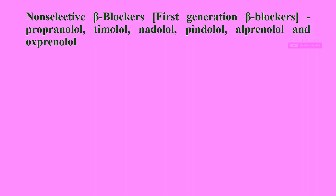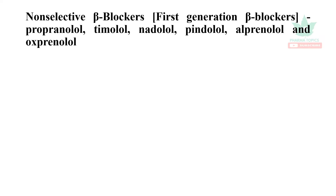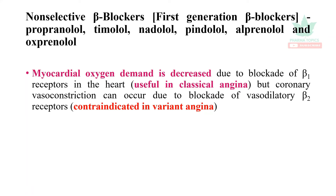Non-selective beta blockers, also called first generation beta blockers, include propranolol, timolol, nadolol, pindolol, alprenolol, and oxprenolol. Myocardial oxygen demand is decreased due to beta-1 blockade, so they are useful in classical angina. However, they are contraindicated in variant angina because they block beta-2 receptors.